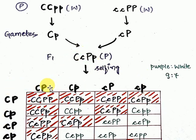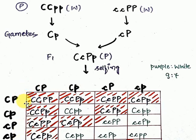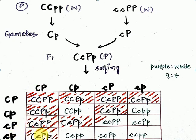When we do selfing of the F1 generation CcPp, we form four types of gametes: capital C capital P, capital C small p, small c capital P, and small c small p. The same four gametes appear in both directions. We then combine them in a Punnett square to get all possible progeny combinations, for example CCPP and CcPp.